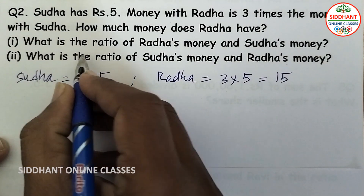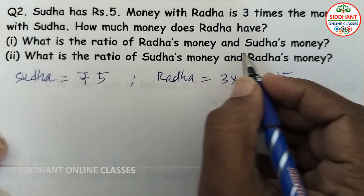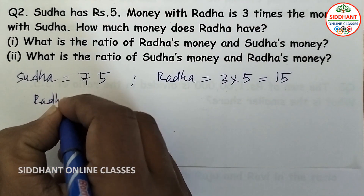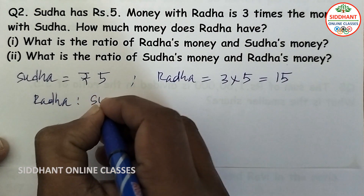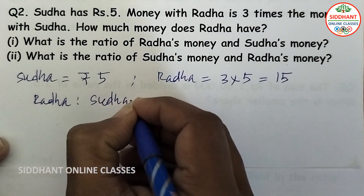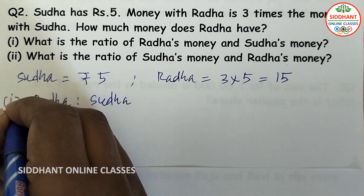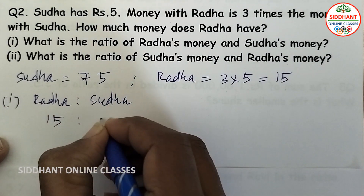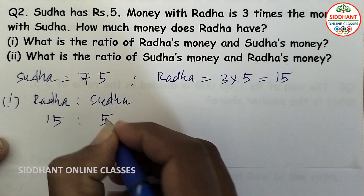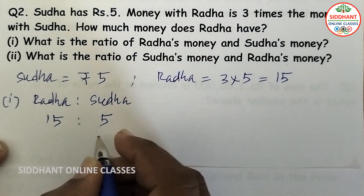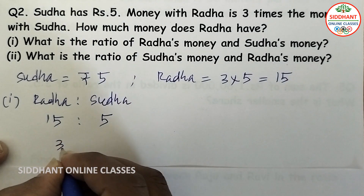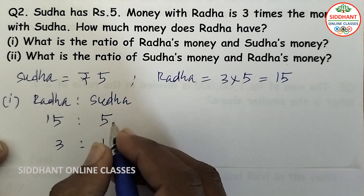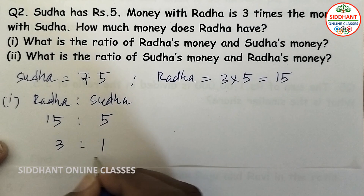Now, what is the ratio of Radha's money and Sudha's money? Radha has 15 and Sudha has rupees 5. When you simplify, divide by 5, you will be getting 3 is to 1. So the ratio of Radha and Sudha is 3 is to 1.